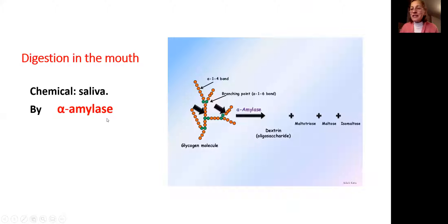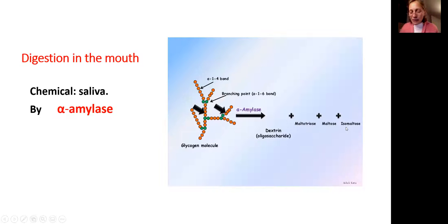Let's start with chemical digestion. Saliva has alpha-amylase. It's an enzyme that will break down these long, long glycogen molecules. It will chop right here and chop right here, and will create dextrins, maltose, and isomaltose.